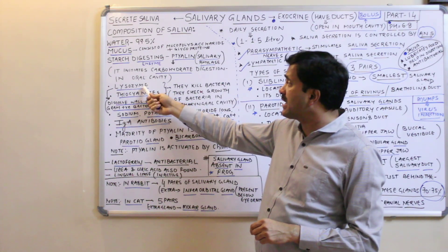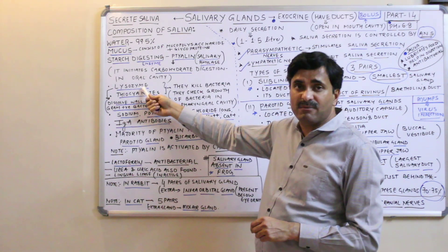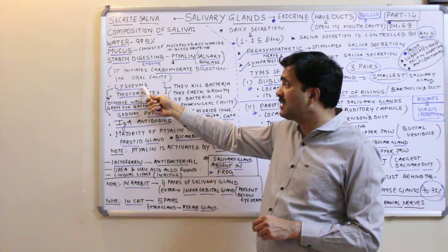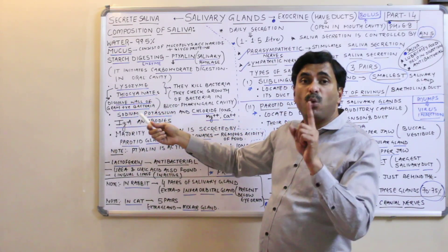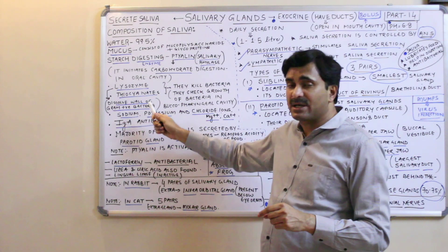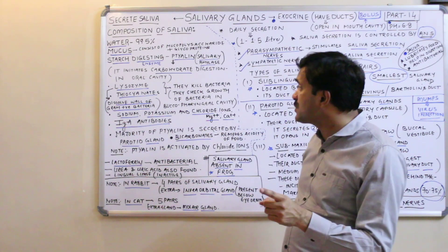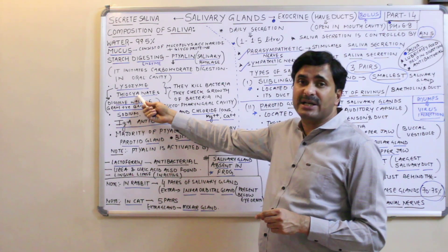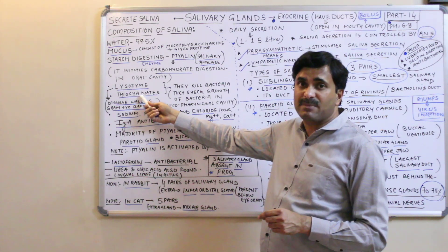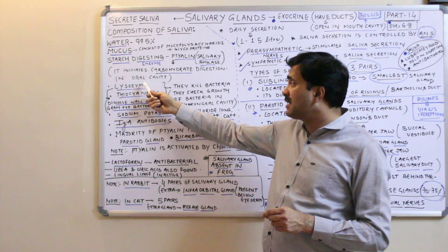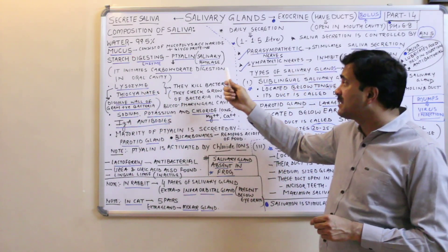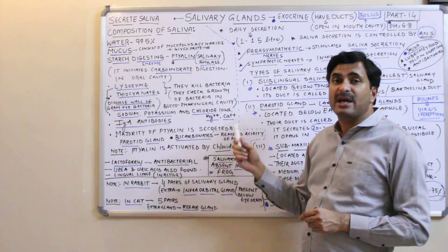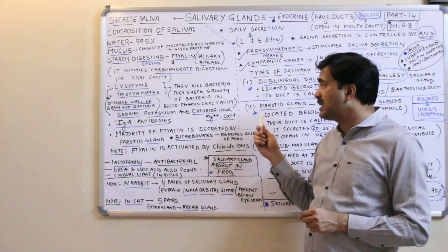Another enzyme found in saliva is lysozyme, which is antibacterial. It dissolves the wall of gram-positive bacteria. Additionally, thiocyanate ions are present in our saliva. Both lysozyme and thiocyanate kill bacteria and check the growth of bacteria in the buccopharyngeal cavity.